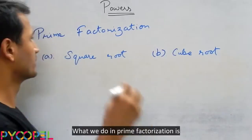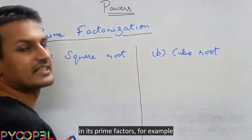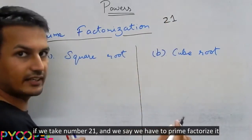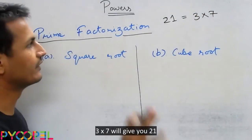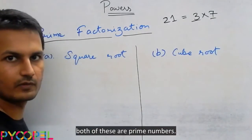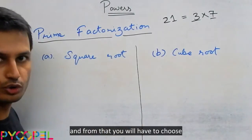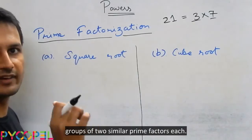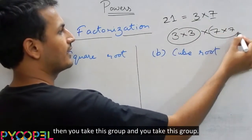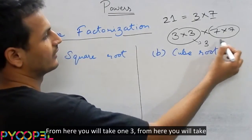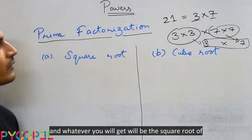What we do in prime factorization is simply factorize the given number into its prime factors. For example, if we take the number 21 and prime factorize it, we get 3 into 7, which gives you 21 — both of these are prime numbers. So you reduce the number to its prime factors, and from that you choose groups of two similar prime factors each. For example, if you have 3 into 3 into 7 into 7, you take this group and this group; from here you take one 3 and one 7, then multiply them, and whatever you get will be the square root of this number.